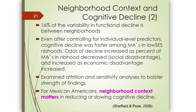Key neighborhood characteristics were economic disadvantage — SES at the neighborhood level — and percent of Mexican Americans in the neighborhood, taken as a measure of social disadvantage. They found that about 16% of the variation in cognitive decline was between neighborhoods — pretty sizable — even after controlling for individual-level predictors. Cognitive decline was faster in low-SES neighborhoods, and odds of decline increased as the percent of other Mexican Americans in your neighborhood decreased. It's only through multi-level modeling that we can get a reliable estimate of neighborhood effects like that.